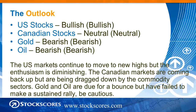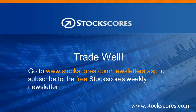The outlook then: bullish on U.S. stocks, though I do see a little bit of a quieting in the U.S. markets. Canadian stocks: neutral — it's really a tale of two markets, commodities versus everything else. Gold bearish, oil bearish, overdue for a bounce but really no good sign that one is coming. The U.S. markets continue to move to new highs but enthusiasm is diminishing. The Canadian markets are coming back up but being dragged down by the commodity sectors. Gold and oil are due for a bounce but have failed to make a sustained rally, so be cautious. That has been the Stock Scores Market Minutes for November 14th, 2014 — have a great week in the market and trade well.